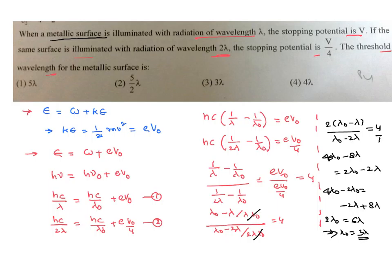Therefore, the threshold wavelength of the given scenario is 3 times of the initial wavelength. And hence, 3 lambda is the answer for the problem. Thank you for watching.